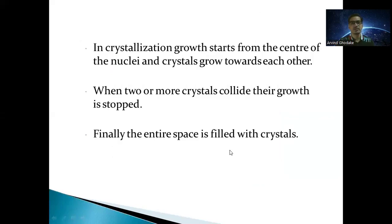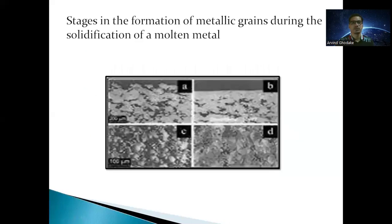In crystallization, growth starts from the center of the nuclei and the crystals grow towards each other. When two or more crystals collide, their growth is stopped, and finally the entire space is filled with crystals. The stages of formation of metallic grains during solidification are: first, initial liquid droplets convert to solid; then further growth of nuclei starts; the amount of solid increases and liquid decreases; and finally only solid remains. These are the stages of formation of metallic grains during solidification.